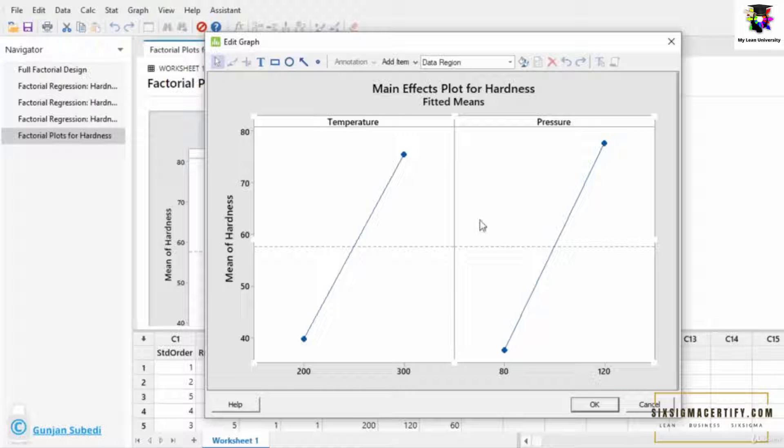So the summary is, main effect plot is used to show the effect of individual factors on the response with the help of the slope or the inclination.